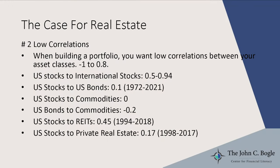The second reason is low correlations. When building a portfolio, you want lower correlations between asset classes — if they're higher than about 0.8, you're not doing much good adding that asset class. Correlations range from minus one to one, and lower is better. Between US and international stocks it's 0.5 to 0.94; with bonds it's almost zero; with commodities it is zero. Comparing US stocks to publicly traded REITs, the correlation is about 0.45, and if you compare to private real estate, it's as low as 0.17 — a good reason to invest in the asset class.